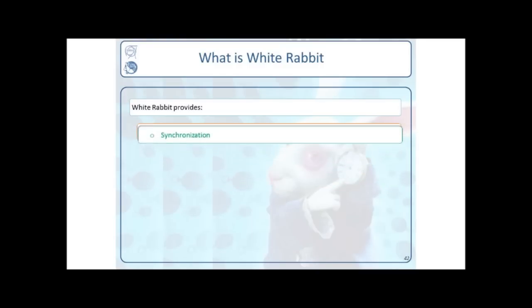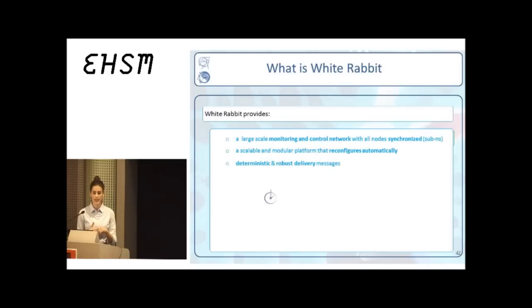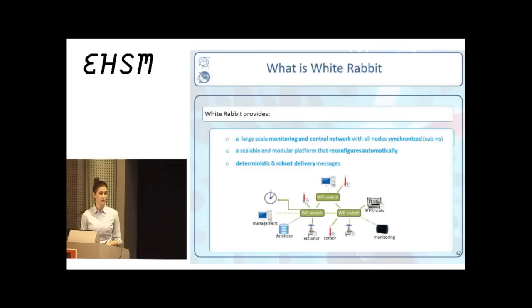So, putting everything together, we have White Rabbit, which is a large-scale monitoring and controlled network that offers deterministic and robust data delivery. At the same network, we can have sensors that need to be tagged with very precise timestamps. We can have actuators that need to react on very precise moments. And we can also have monitoring and management devices that do not require these real-time properties. The network offers minimal reconfiguration efforts, so the addition and removal of nodes can take place dynamically.